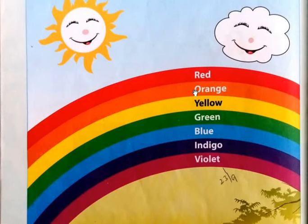Red. Orange — O, R, A, N, G, E — orange. Yellow — Y, E, double L, O, W — yellow.